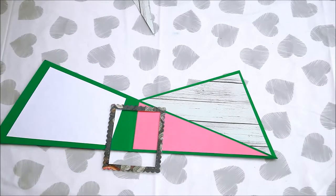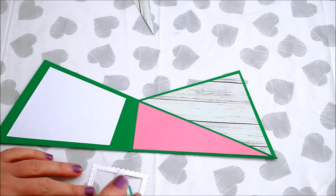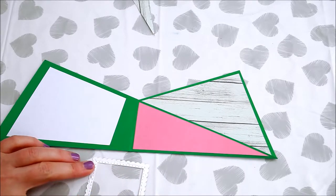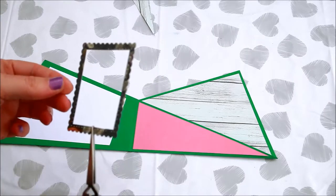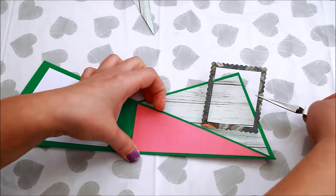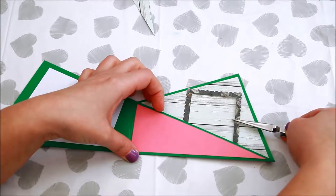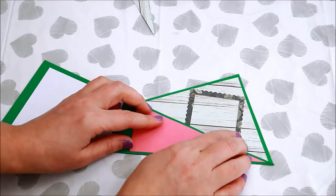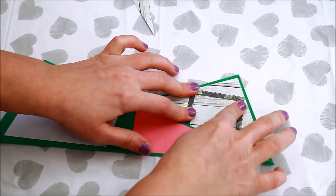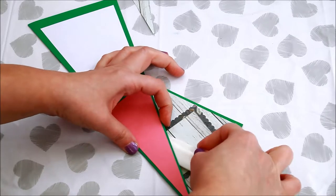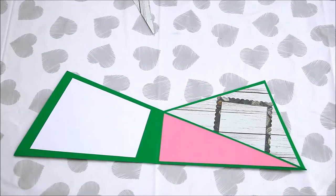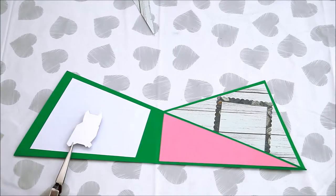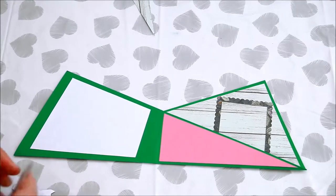It's time to embellish the inside of the card. I used my dies to create a little scalloped frame which goes well with a wood grain background. Then I die cut an owl. All the supplies I used are linked in the description below.